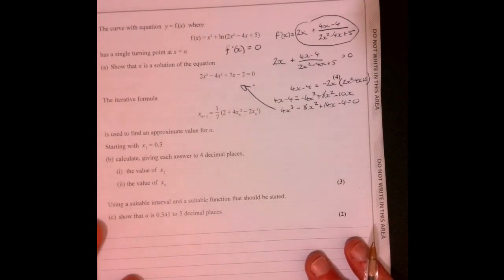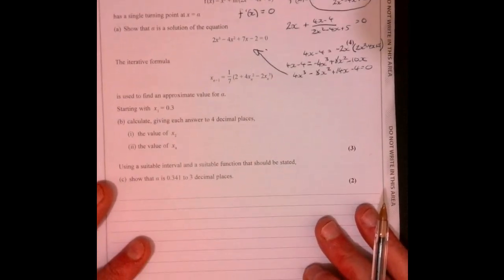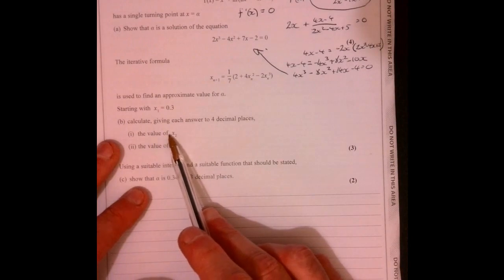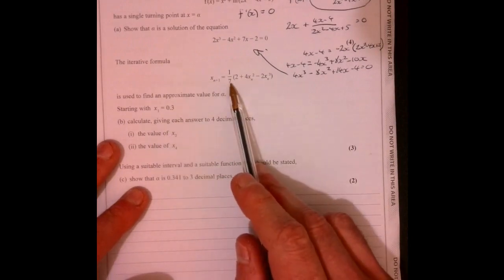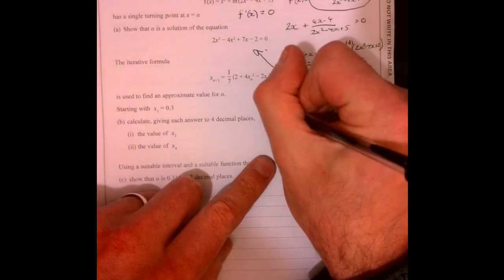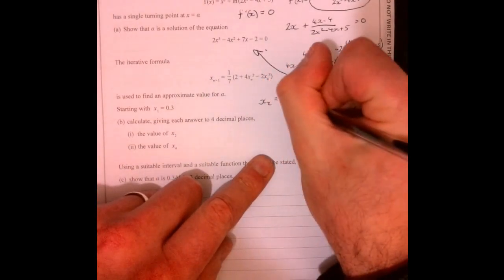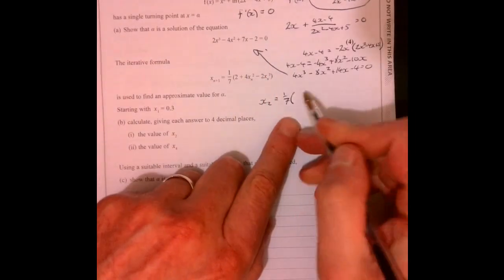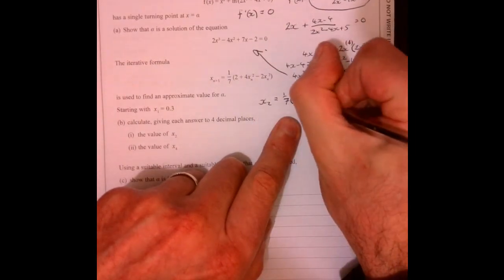Alright, so now part B. So let's have a little look. So basically, we just need to repeat this. It looks complicated, but actually they're kind of quite easy. So what you've got to do is just stick in x1.